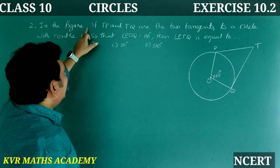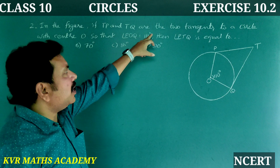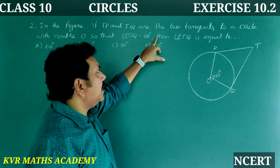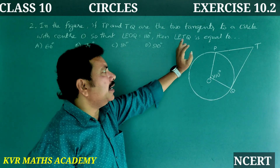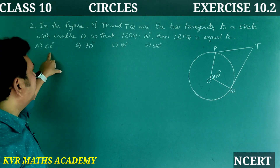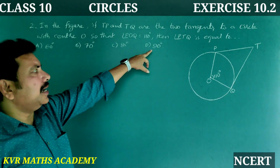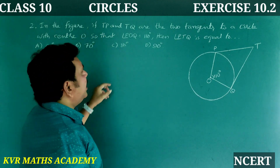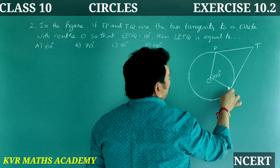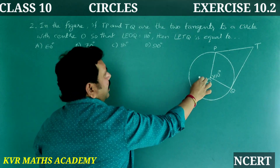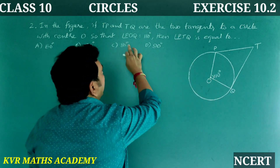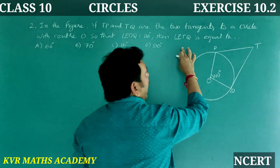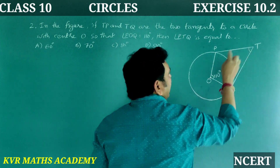Second question. In the figure, if TP and TQ are the two tangents to a circle with center O, such that angle POQ is equal to 110 degrees, then angle PTQ is equal to — options: 60 degrees, 70 degrees, 80 degrees, or 90 degrees. We need to find angle PTQ.